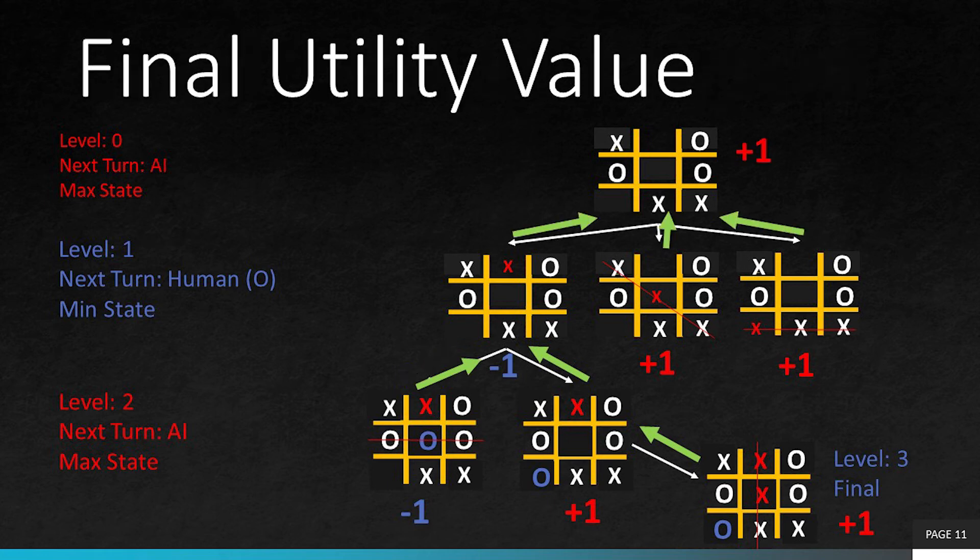Level 0 is the max state and hence it will take the maximum value from the possible child nodes utility values. Final utility value assigned to the node at level 0 is plus 1. This automatically means that the AI player wins.